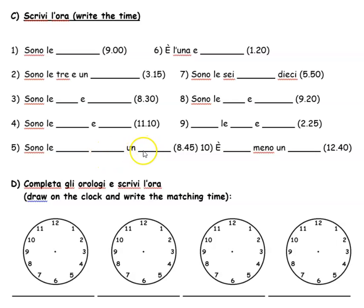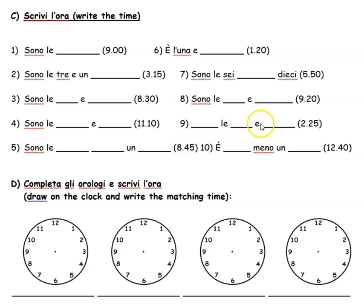Number five: sono le nove meno un quarto — nine minus a quarter, nove meno un quarto. One twenty is è l'una e venti. Number seven: sono le sei meno dieci — six minus ten would give you five fifty. Number eight: sono le nove e venti — nine twenty. Number nine: sono le due e venticinque. Number ten: è l'una meno venti — and in fact there's a mistake there, sorry about that, it shouldn't have the word 'un', it should just be meno venti. So è l'una meno venti, meaning it's one minus twenty.